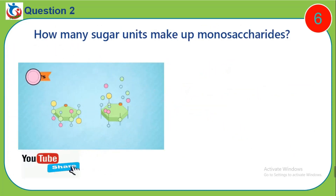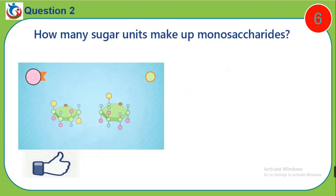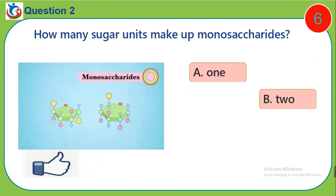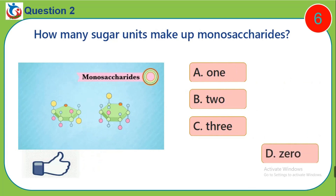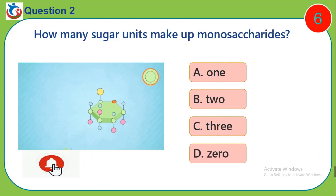Question 2. How many sugar units make up monosaccharides? A. 1. B. 2. C. 3. D. 0.